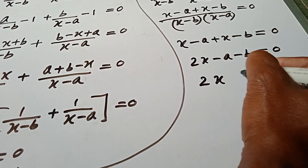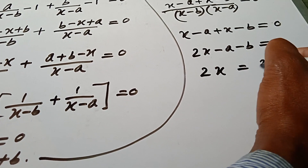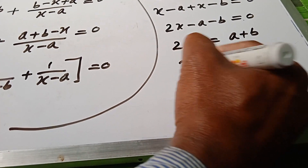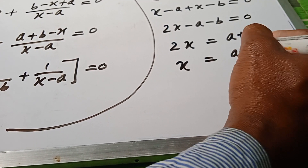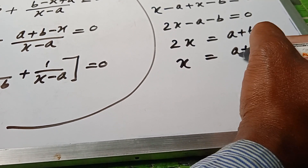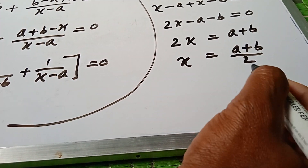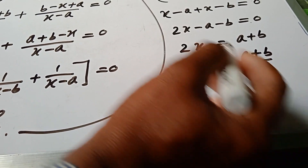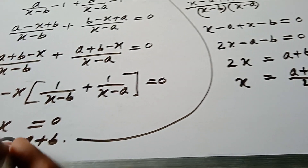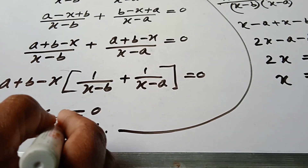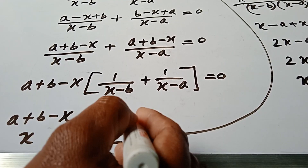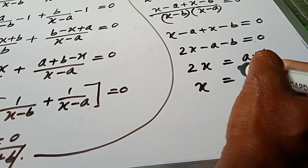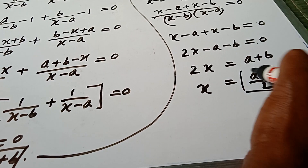Therefore 2x equals a plus b, or x equals a plus b over 2. So the values of x in this equation are x equals a plus b and x equals a plus b over 2.